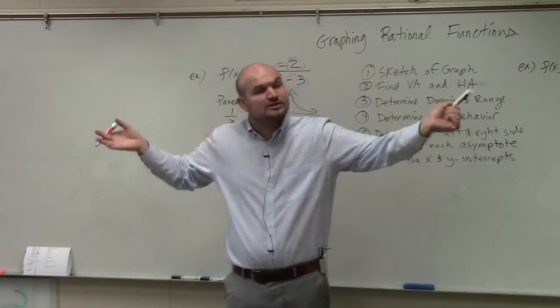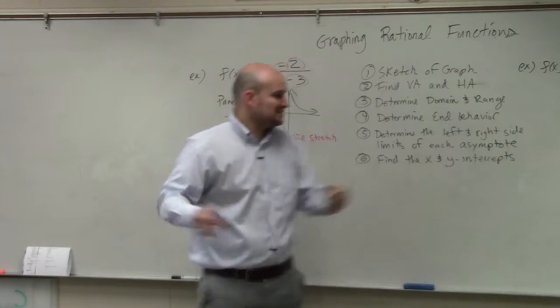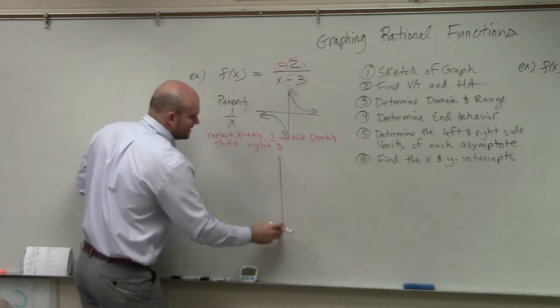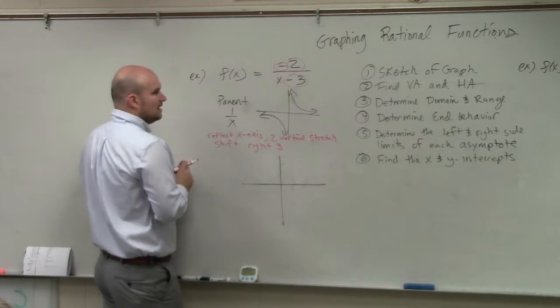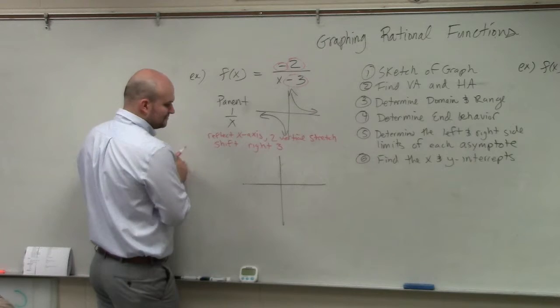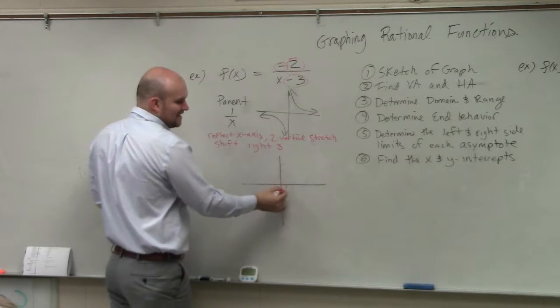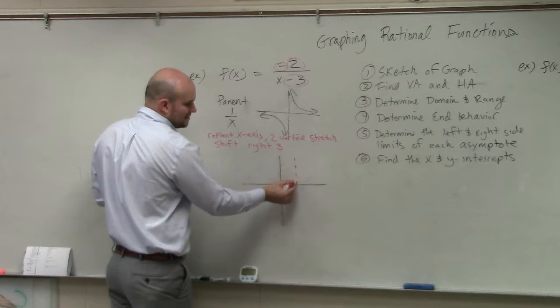This is the same thing that we've been doing all of chapter 1, identifying the transformations. So you guys can see that this new graph is now going to look something like this. It's now being reflected and it's being shifted over 3. So if the vertical asymptote was at 0, now the vertical asymptote is at 3.